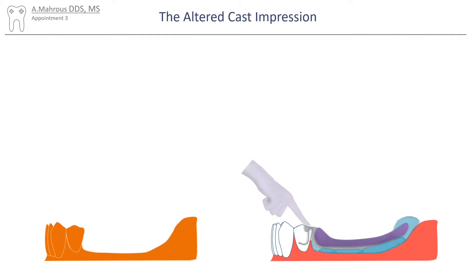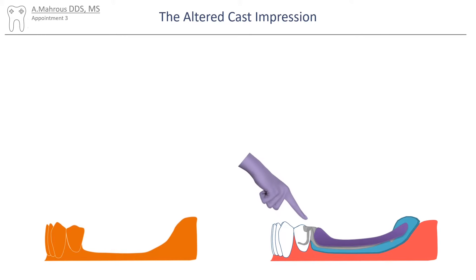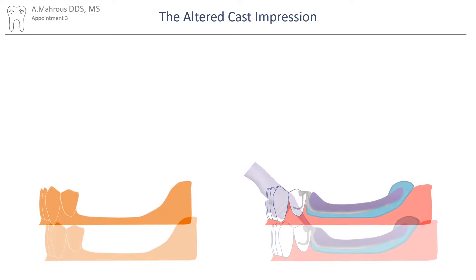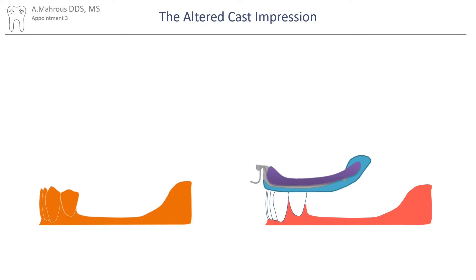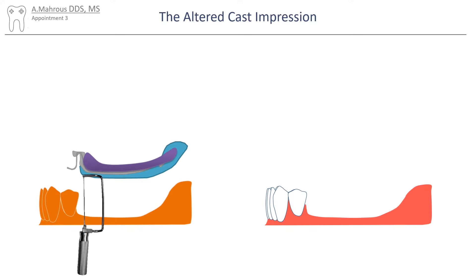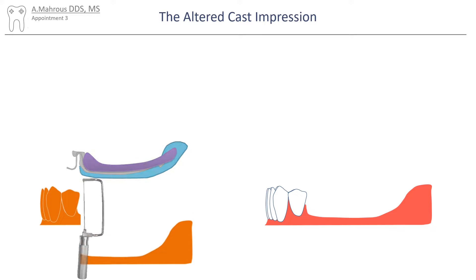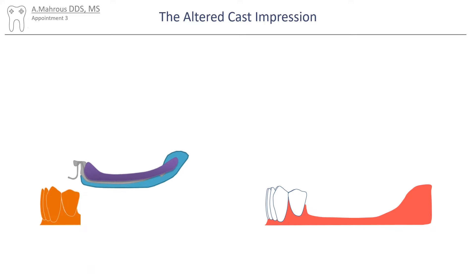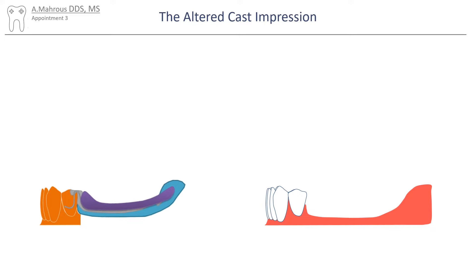Care must be taken to make sure pressure is only applied to the rest seat area of the framework. The distal extension area is then sectioned, and the framework with the impression is seated. The distal area is then re-poured against the new impression.